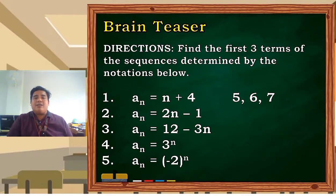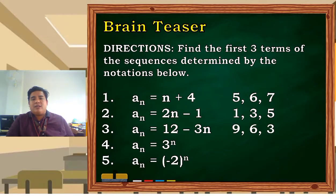2 times 1 is 2 minus 1 is 1. 2 times 2 is 4 minus 1 is 3. That's how we got 1, 3, and 5. For the third one, we have 9, 6, 3. It's decreasing because we are subtracting. Number 4: 3, 9, 27.